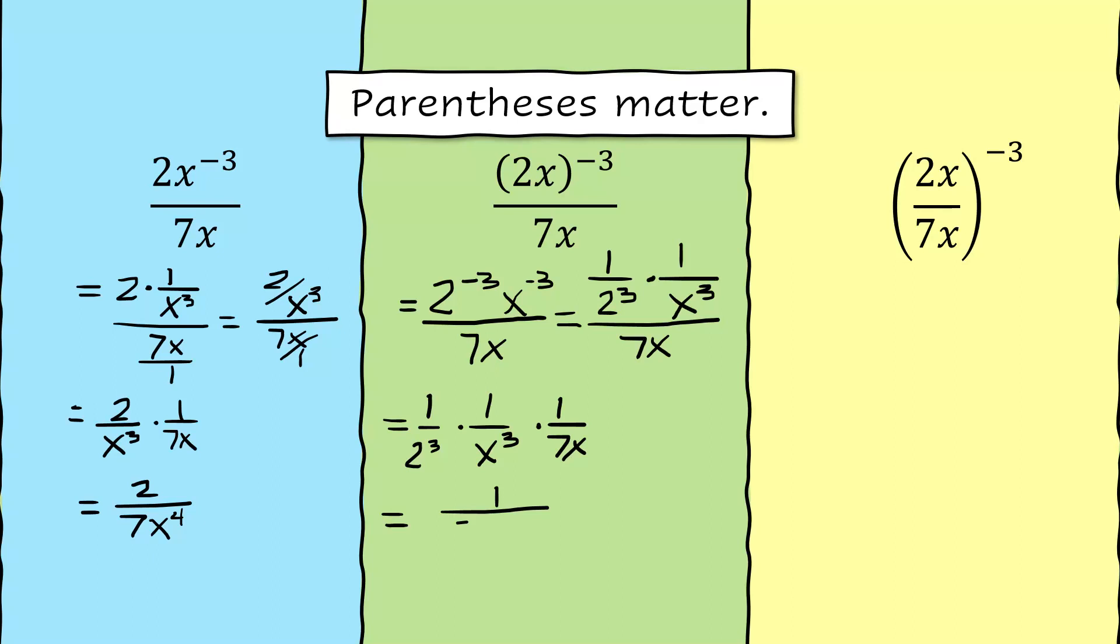Multiply all the numerators straight across, you get 1 times 1 times 1, which is 1. Down below, 2 cubed is 8, x cubed times 7x, and our final answer is 1 over 56 x to the 4th power.